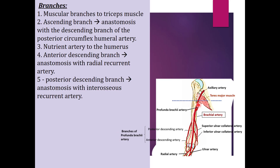Branches of the profunda brachii artery include: muscular branches to triceps; an ascending branch that anastomoses with the descending branch of the posterior circumflex humeral artery; a nutrient artery to the humerus; an anterior descending branch that anastomoses with the radial recurrent artery; and a posterior descending branch that anastomoses with the interosseous recurrent artery.